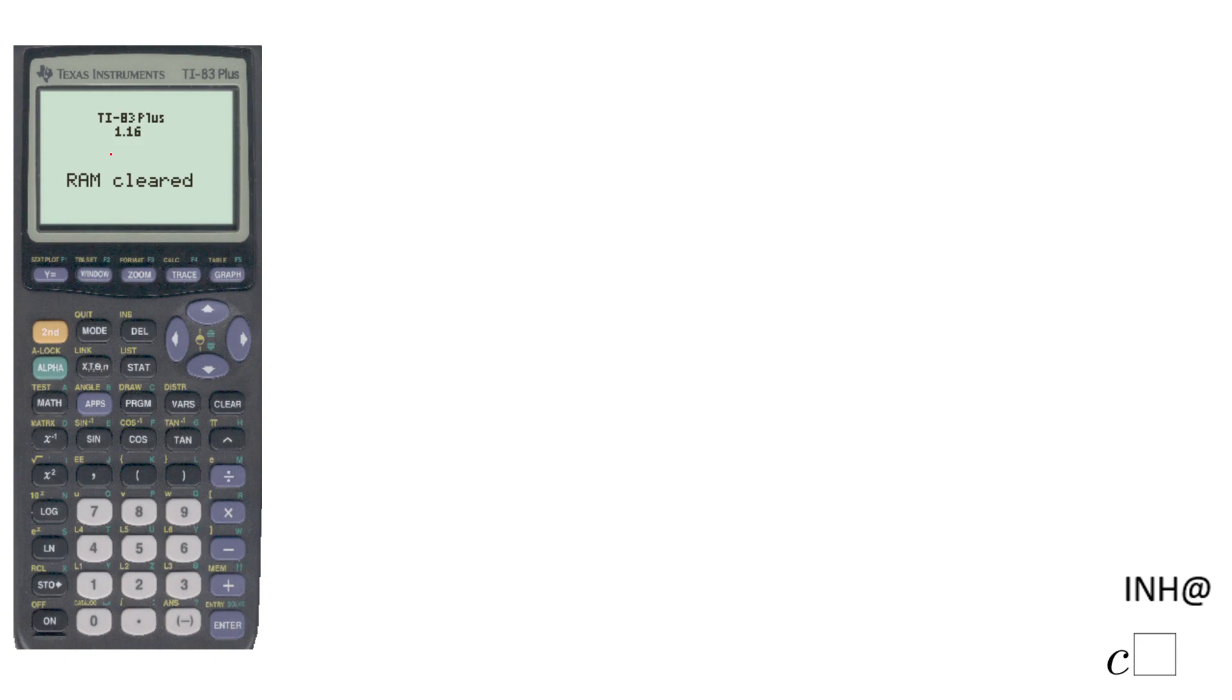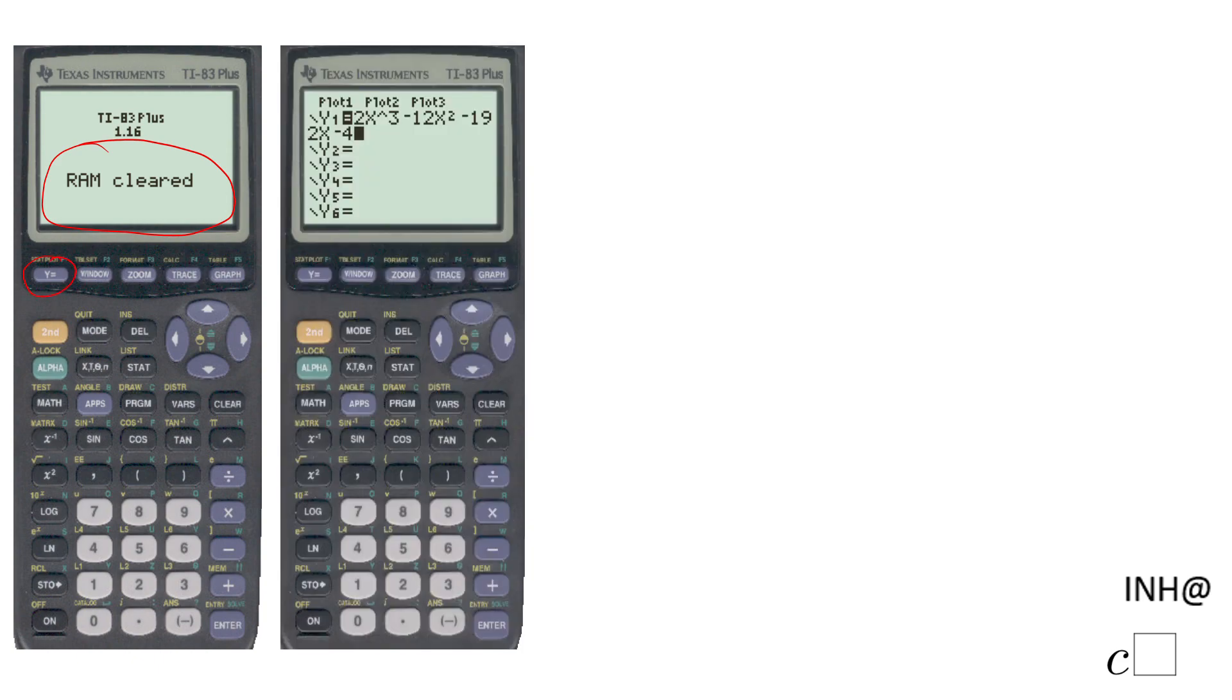If you notice, I cleared the calculator, which I suggest you do. Then I want you to press the Y equals like I did and type in this polynomial function: 2x³ - 12x² - 192x - 4. If you want to see the graph of this function, you want to click on this button which says Graph, and this is what you get.